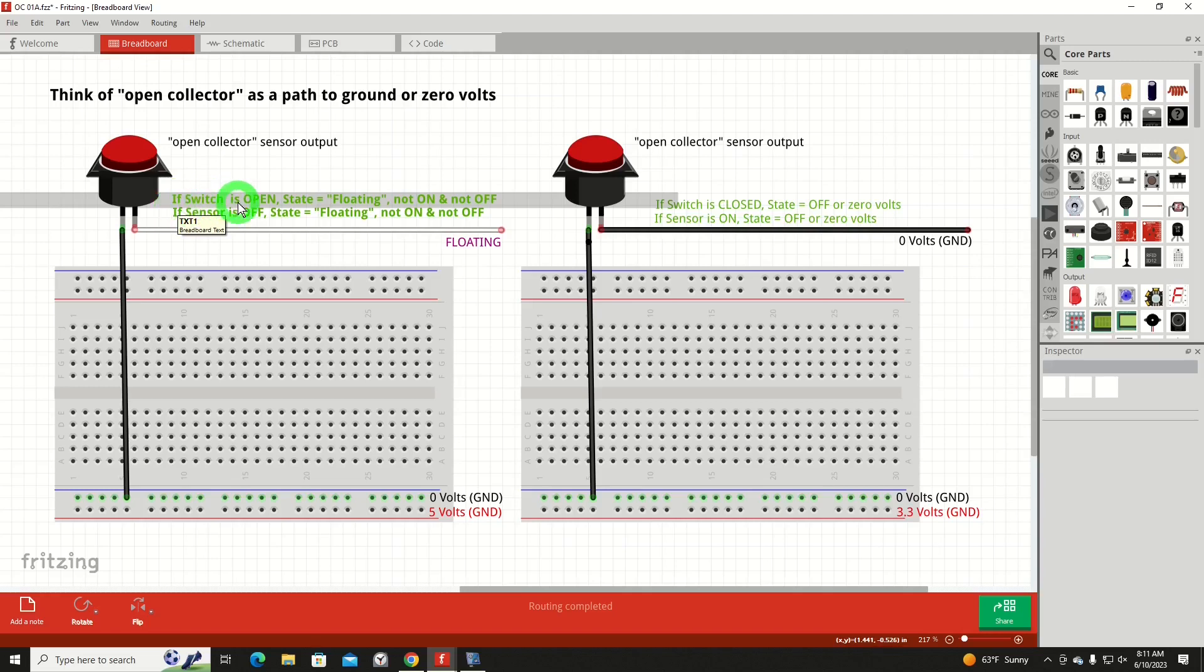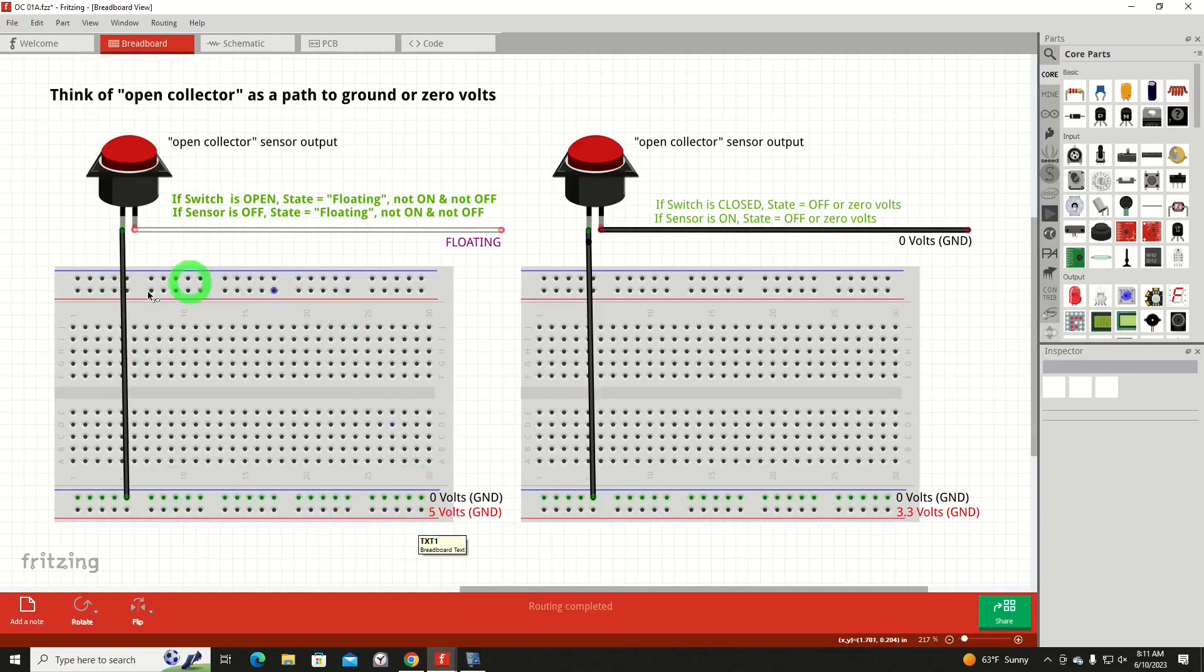If the switch is open, or if the sensor is off, our state would be that of floating. It would not be on, and it would not be off. It would be somewhere in between. Here's our breadboard. I've got our power rail down below with zero volts and with five volts. At this point there's no connection on five volts, but we do have a connection to one side of our switch or sensor that is at zero volts. If the sensor is open or the switch is not closed, it is floating. This is just a wire hanging out in space. Even if this end is connected to an input, it's still floating.